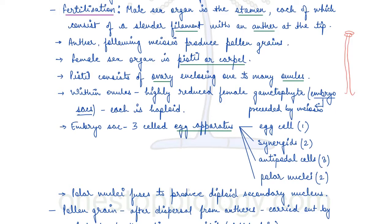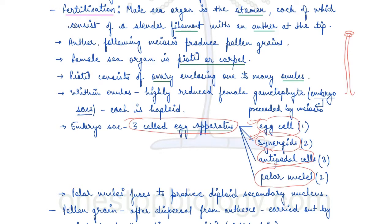Each embryo sac is haploid and has a three-celled egg apparatus consisting of one egg cell, two synergids, three antipodal cells, and two polar nuclei. These polar nuclei ultimately fuse to form the diploid secondary nucleus.